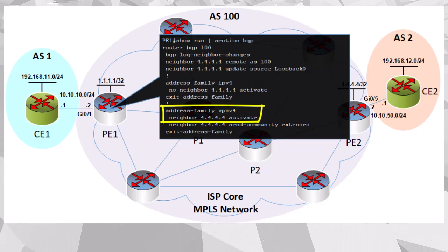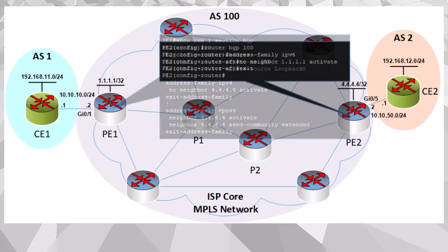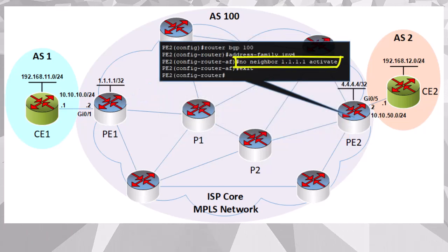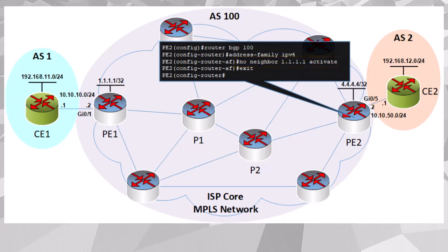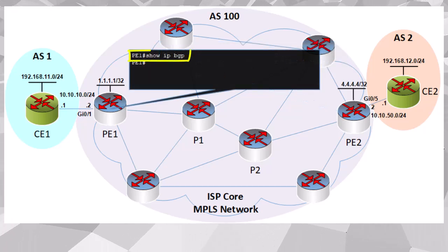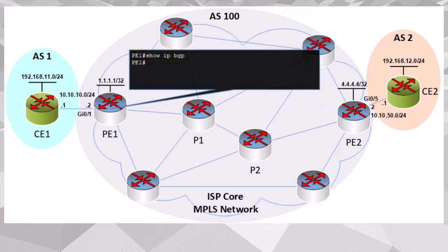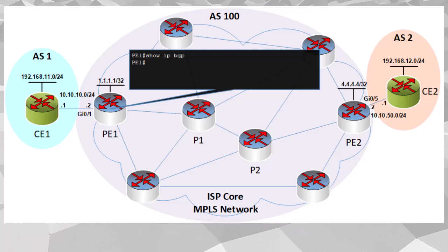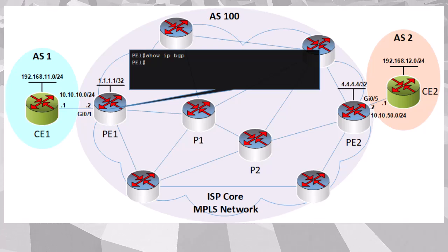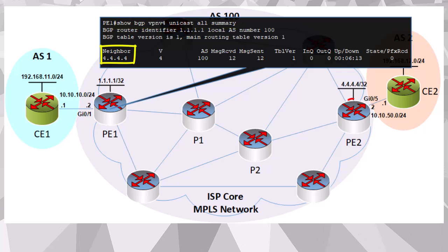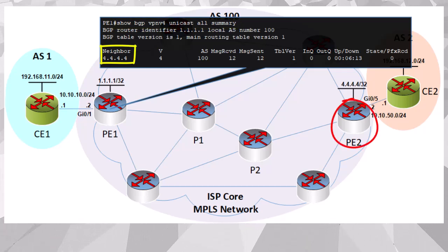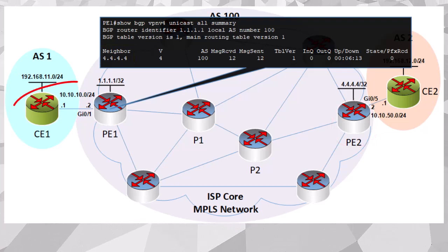Now we need to perform a similar configuration on PE2 as well, thus deactivating the advertising of IPv4 routes. So now PE1 and PE2 are only sharing VPNv4 routes. Let's take a look at our BGP table on PE1 using the show IP BGP command. There's nothing there — that's because this command shows the information shared concerning IPv4 routes, but we're not sharing any. To see our shared VPNv4 routes and the related peerings, we must issue a different command. Here we see our neighbor of 4.4.4.4, which is PE2.